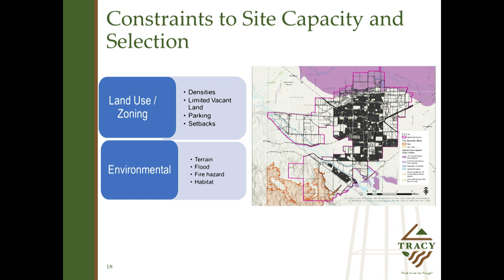Key constraints on site capacity and selection include land use and zoning. The city controls general plan designations, overall densities, and zoning, so we look at permitted densities — minimum and maximum — availability of vacant or suitably zoned land, and development constraints like parking, setbacks, height, and floor area ratio. Your general plan may recommend an area for moderate or high density residential, but your zoning sometimes might not actually allow you to get there if the numbers don't work out. We also look at environmental and other legal constraints.